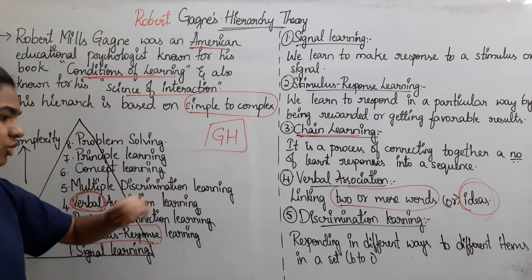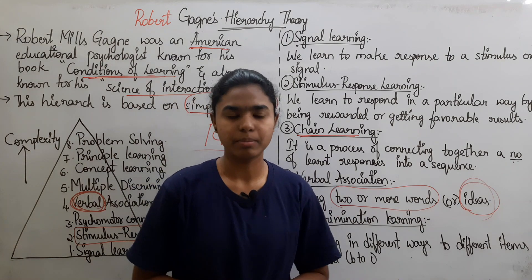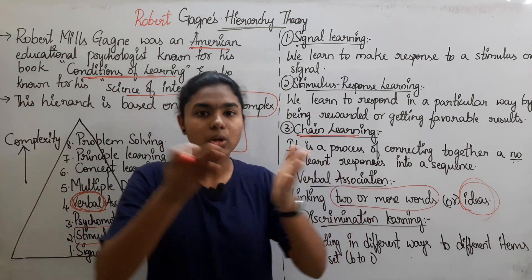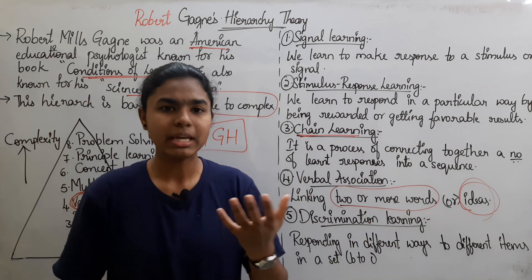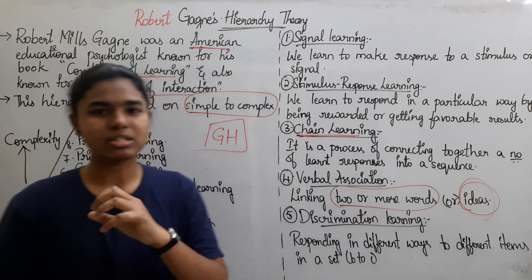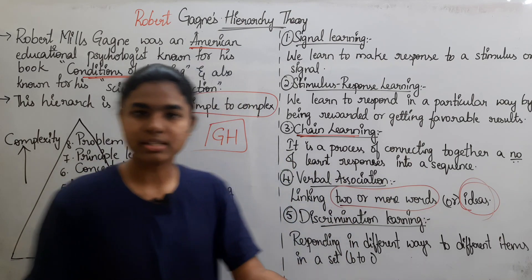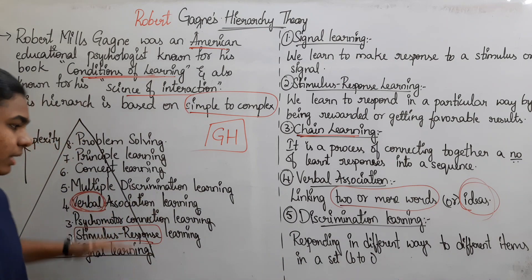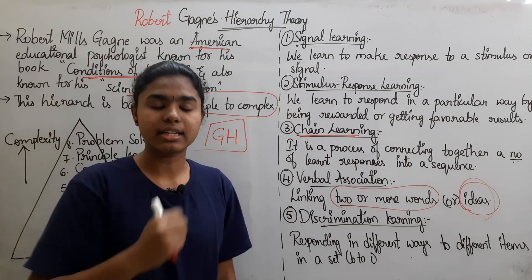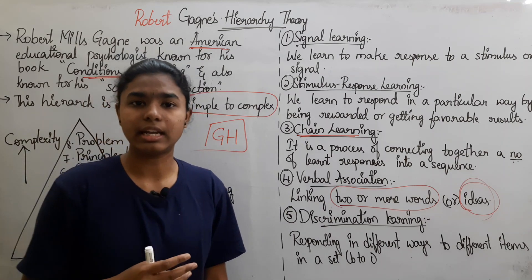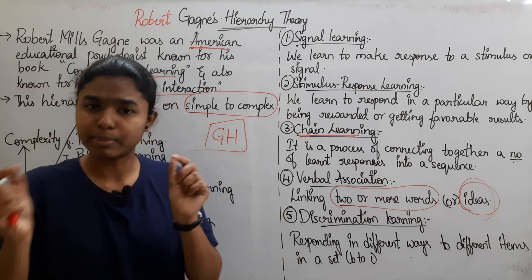Next is Multiple Discrimination Learning. In this stage, we behave differently in different situations. For example, with a teacher we behave one way, and with friends we behave differently. We distinguish between stimuli and give different responses depending on the situation. This is the fifth stage.